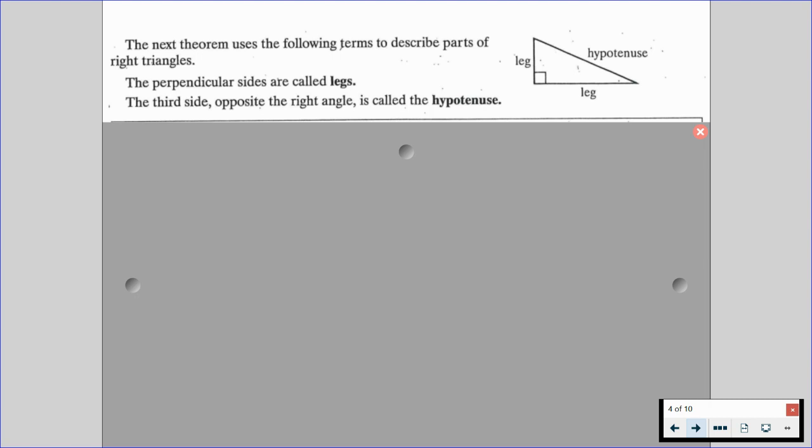So the next theorem uses the following terms to describe parts of right triangles. Perpendicular sides are called legs, as you see in the diagram in the top right. We have two legs, and then the third side that's opposite of that right angle is called the hypotenuse. This should be review, but if it's not, welcome.